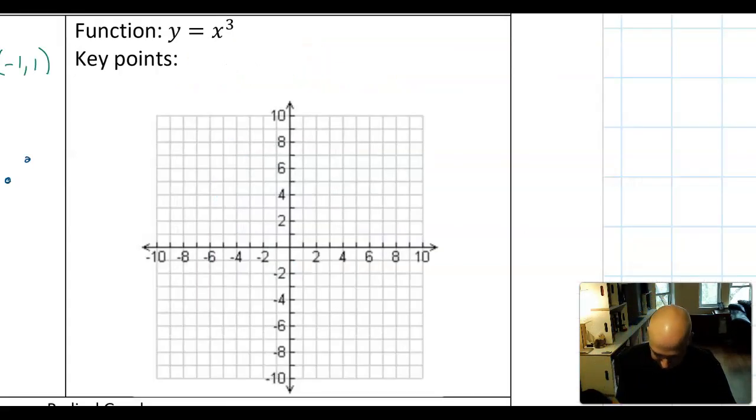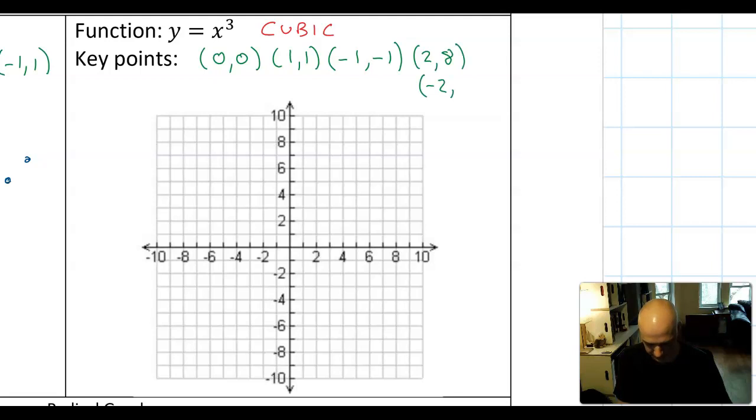This next function might be a little less familiar. This is the graph of y equals x cubed and this we call a cubic graph. Key points on y equals x cubed are (0,0) as before, (1,1) as before. When you input -1, (-1)³ is -1. If we input 2, 2³ is 8. If you input -2, (-2)×(-2)×(-2) gives you -8.